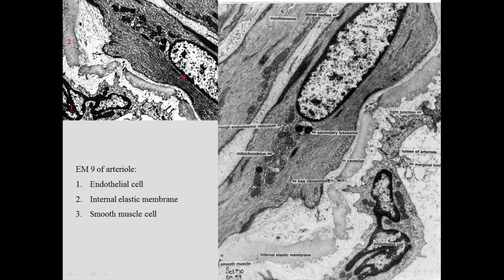At higher magnification we see endothelial cells lining the lumen, marginal folds where junctions occur between adjacent endothelial cells, and the internal elastic lamina — all comprising the intima. The media contains smooth muscle cells. You can see apical caveolae in these smooth muscle cells, no striations, organelles, lots of filaments, and fusiform densities — some on the plasma membrane and others inside the cell — where different fibers are bound to one another.